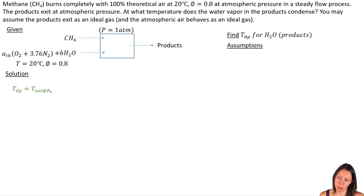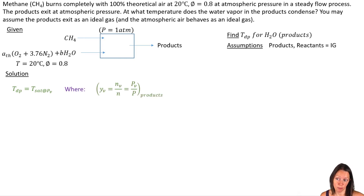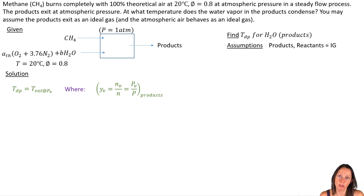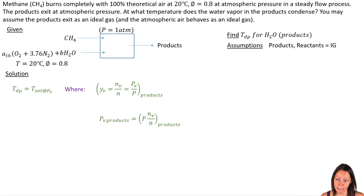I want to know the dew point temperature — the temperature at which the water vapor condenses in the products. The dew point temperature is just the saturation temperature at the partial pressure. If I treat the products as an ideal gas, I can relate the mole fraction of the water vapor in the products to the partial pressure of the water vapor within those products, and from there get the dew point temperature. So I need to figure out what that mole fraction is.